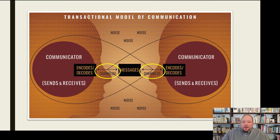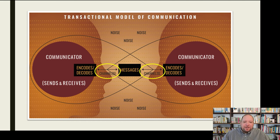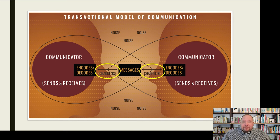So are you seeing somebody face to face? Are you talking on the phone? Are you sending smoke signals? Are you tapping through a wall using Morse code? Are you leaving a post-it note or sending a text message? Those are all different types of channels. The way that we communicate — the how of which we communicate — is called the channel.